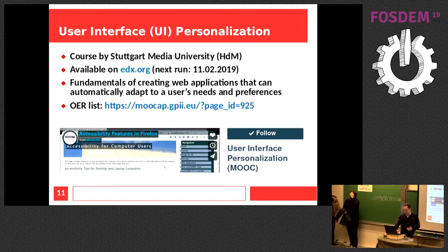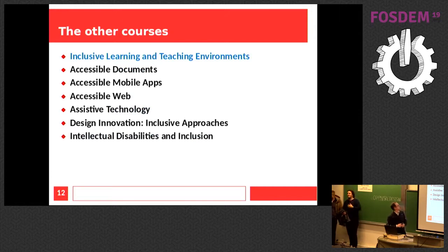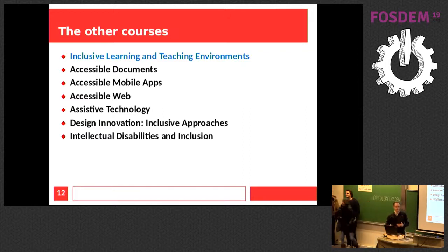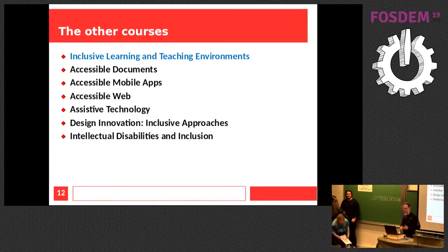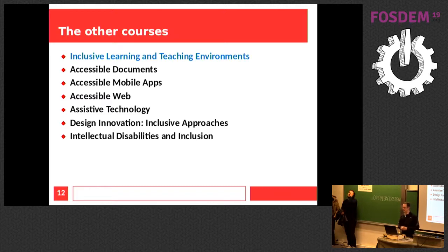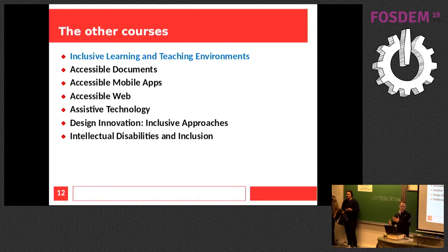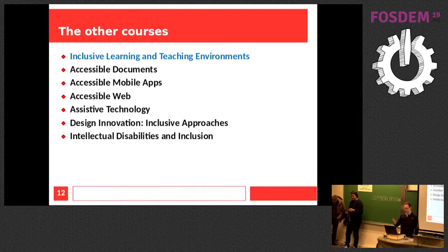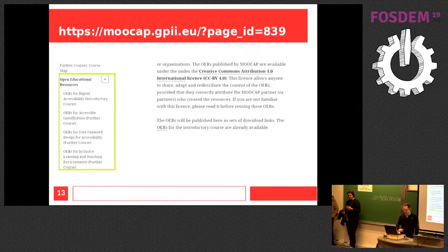There were a bunch of other courses. One was 'Inclusive Learning and Teaching Environments,' specifically for higher education institutions wanting to better cater for students with disabilities. 'Accessible Documents' is mainly about office formats and PDF — how to make those accessible. There's a course about accessible mobile apps, one about accessible websites, one about assistive technologies such as screen readers and magnifiers. One called 'Design Innovation: Inclusive Approaches' covers how you can support innovation by including people with disabilities in your design process. And the last one is about intellectual disabilities inclusion.